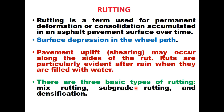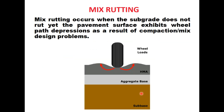There are three basic types of rutting: mixed rutting, subgrade rutting, and densification. Mixed rutting occurs when the subgrade does not rut, yet the pavement surface exhibits wheel path depressions as a result of compaction or mix design problems. The mix lacks the internal strength to resist permanent deformation due to loaded tires. This rutting is confined to the HMA and does not penetrate to the subgrade level. Whenever there is a clear raised elevation on the edge of the wheel path, this is an indication of mixed rutting.